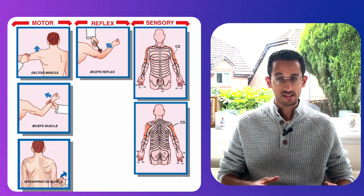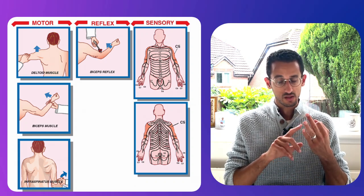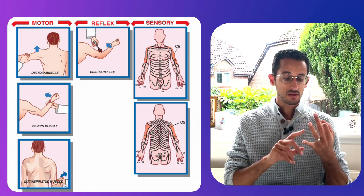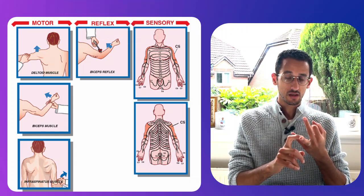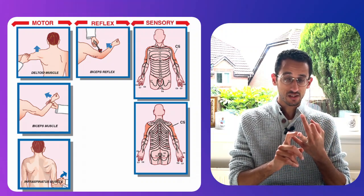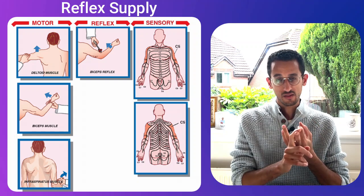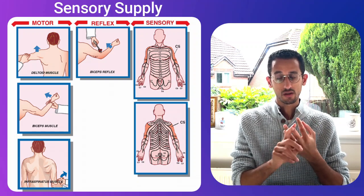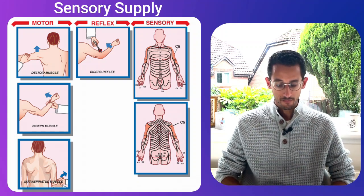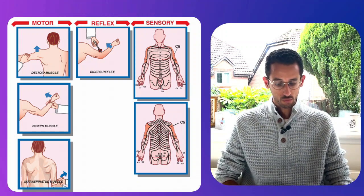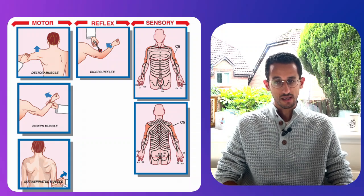As we can see in this picture, for the C5 nerve root — or any nerve root — if you want to test it, you have to think about three things: the first is the motor supply, the second is the reflex or reflexes that need to be tested, and the third is the sensory supply or sensory examination.